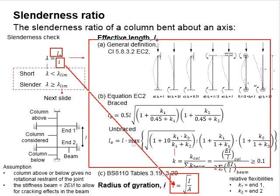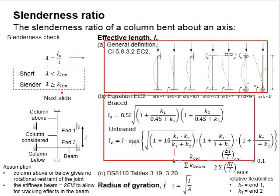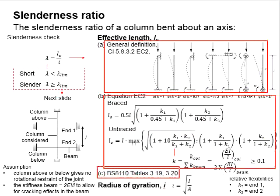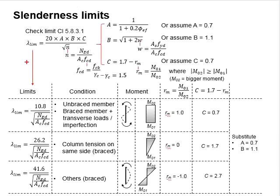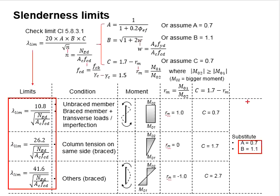The effective length can be determined from three methods: based on general definitions, based on the equations given, or by referring to BS 8110 Tables 3.19 and 3.20. The slenderness ratio is then checked against the slenderness limits. Depending on the moments acting on the columns, you are able to determine the ratio rm, and with that you can determine the slenderness limit, assuming a equals 0.7 and b equals 1.1.